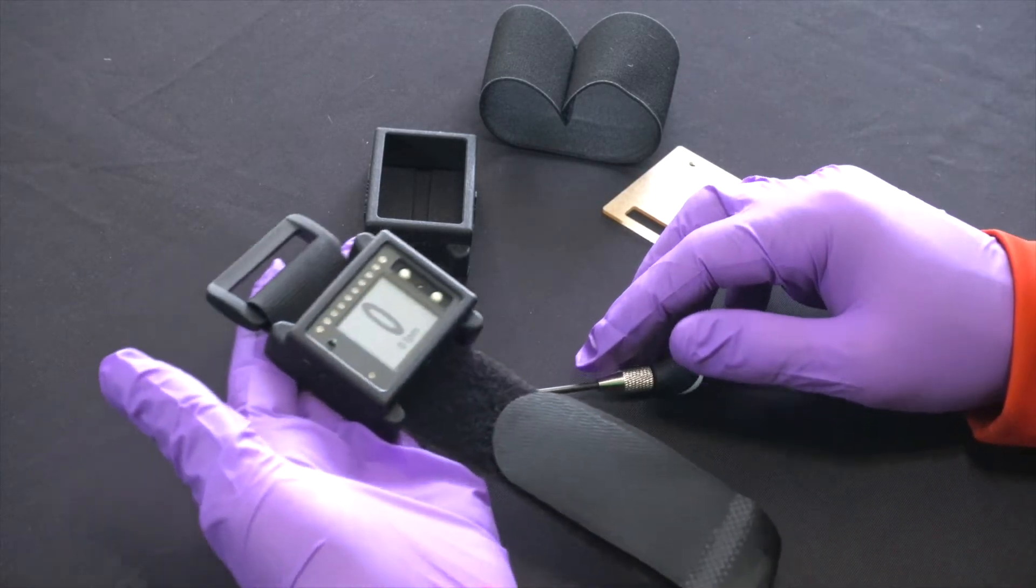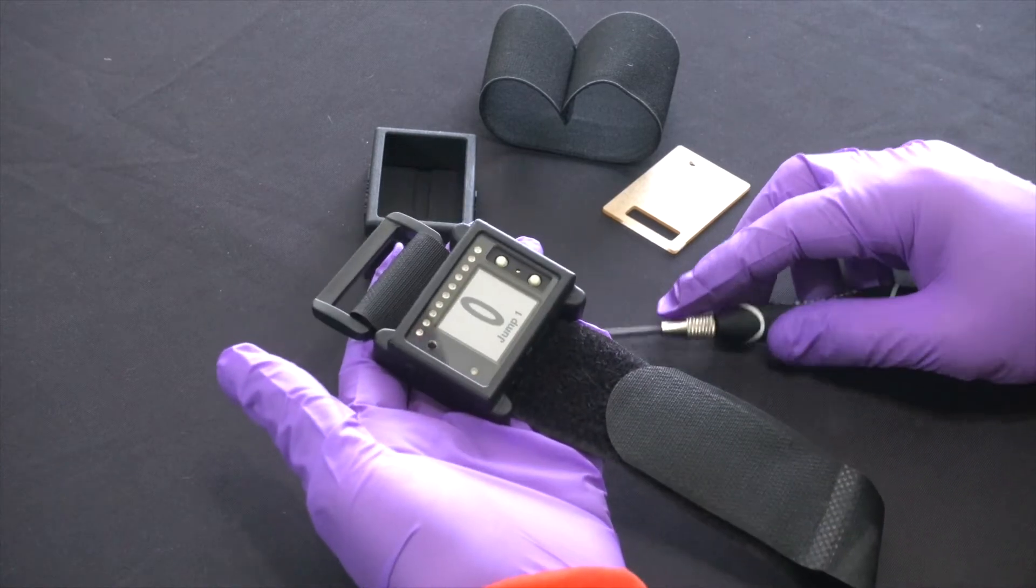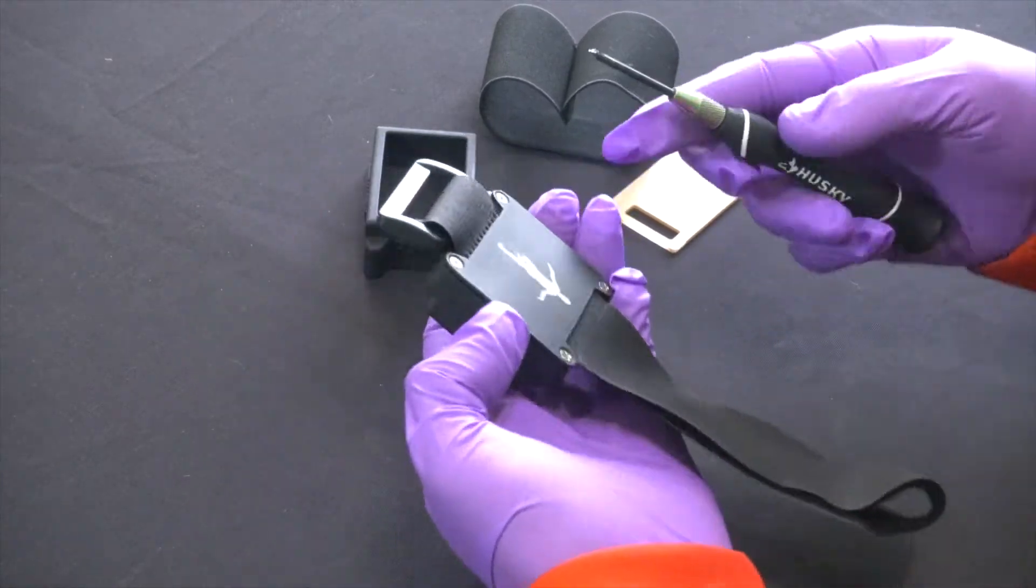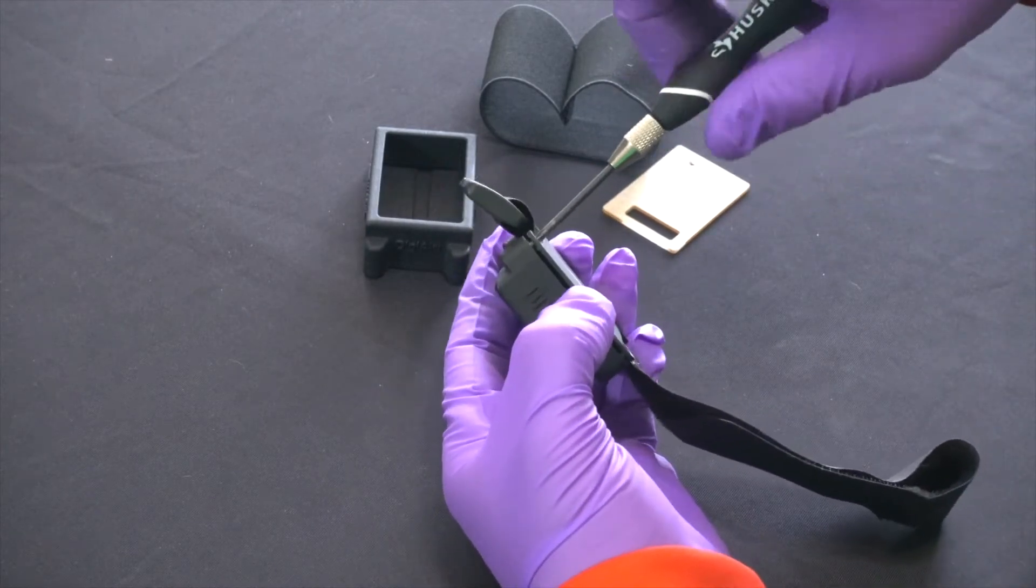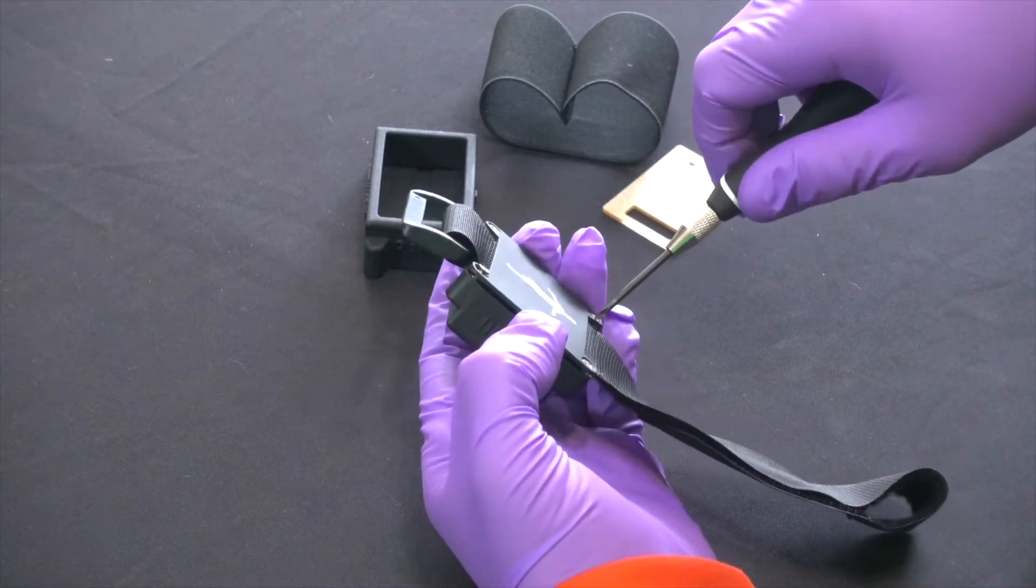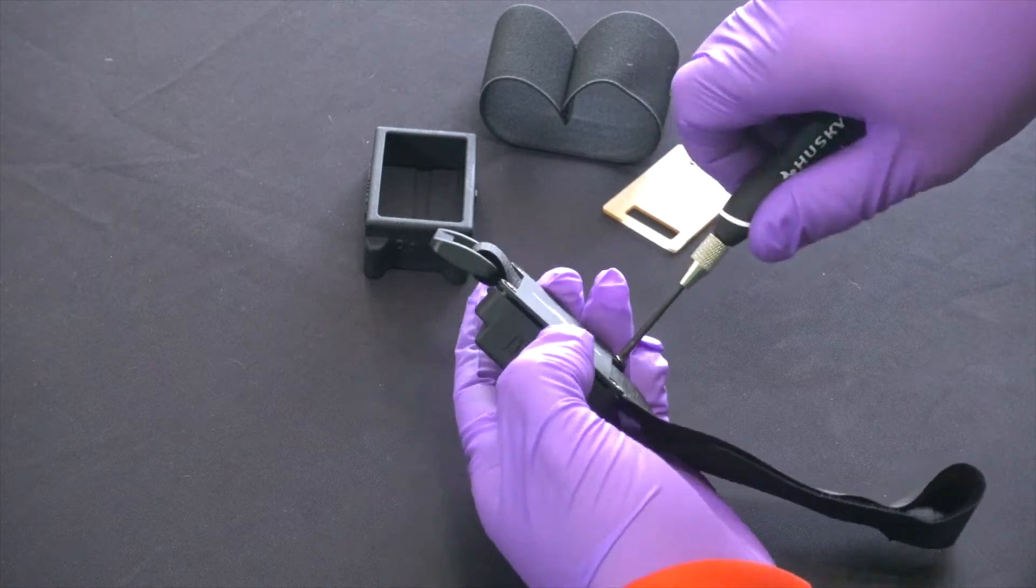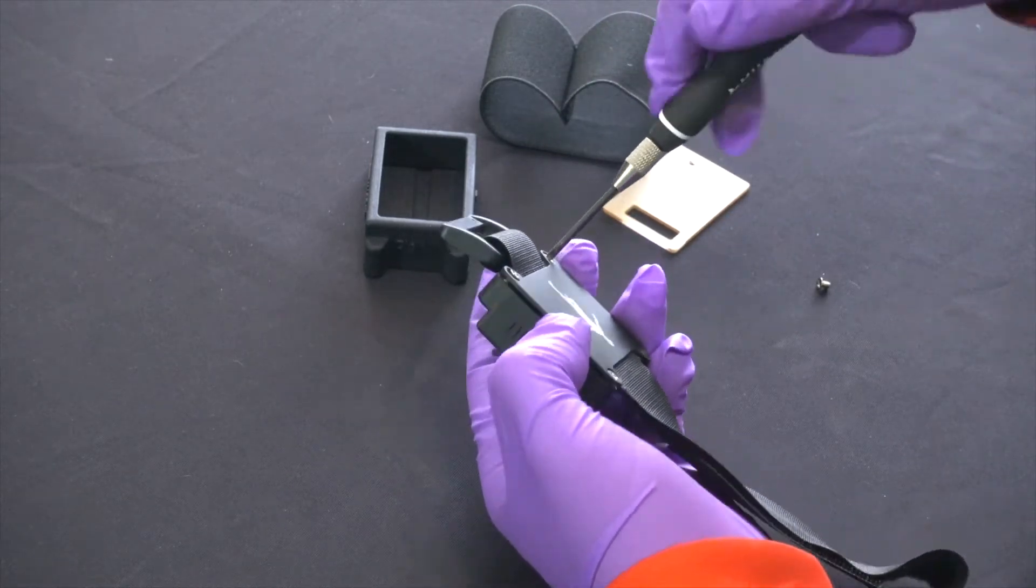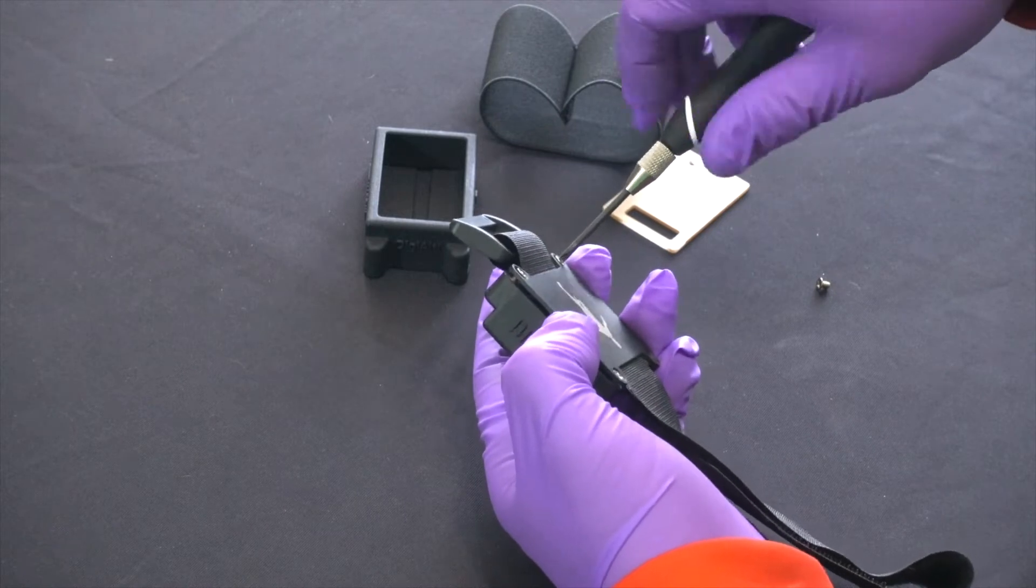Alright, so the first thing I'm going to do, I've got my altimeter here. You will need a small phillips screwdriver like this. We're going to take the altimeter out of the velcro mount. These screws, by the way, might be different than the screws in this, so use the screws with the elastic mount. These ones could be slightly larger.